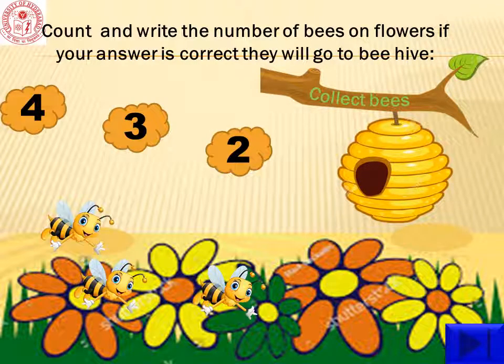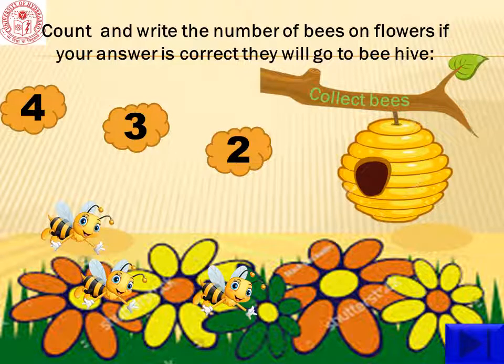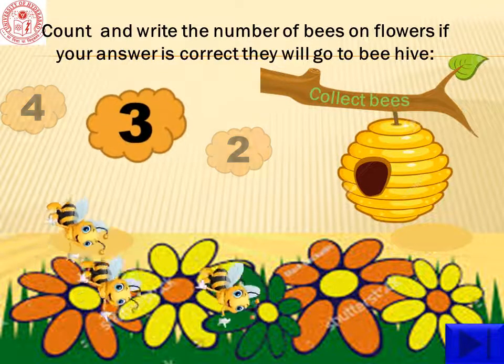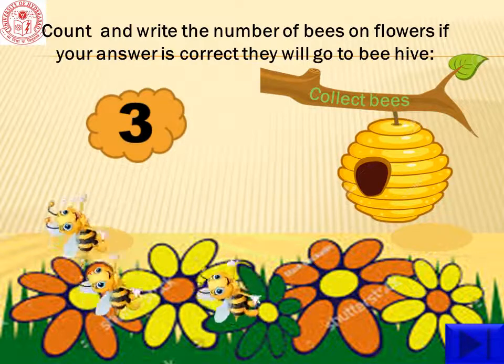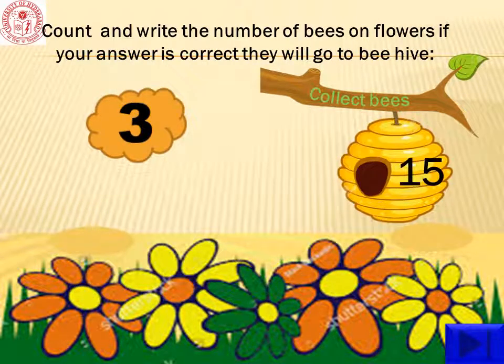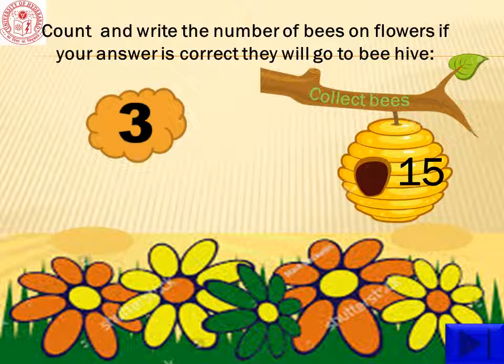Children, let us count how many bees we have. One, two, three. Yes, we have three bees. So, click on number three. Wow, the bees are going to the beehive. Till now, how many bees we collected? Yes, here we have 15 bees.